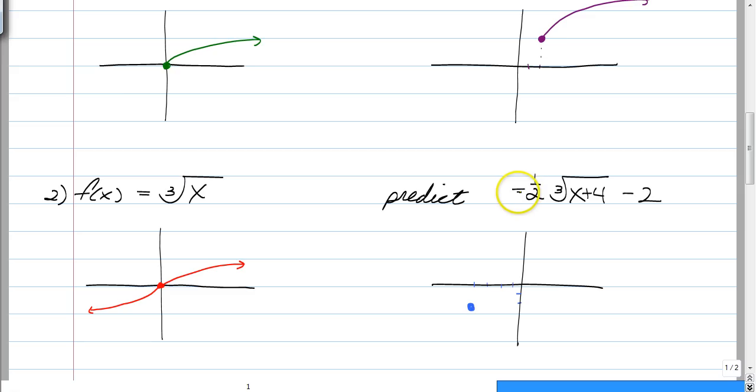And now this negative sign is going to flip it vertically, and the 1 half is going to squish it. So if we were just sketching this, it would look a little bit like that. Now, of course, you can use your graphing calculator to give you the exact graph. But the purpose of this set of notes is just to help you predict what is happening with these graphs.